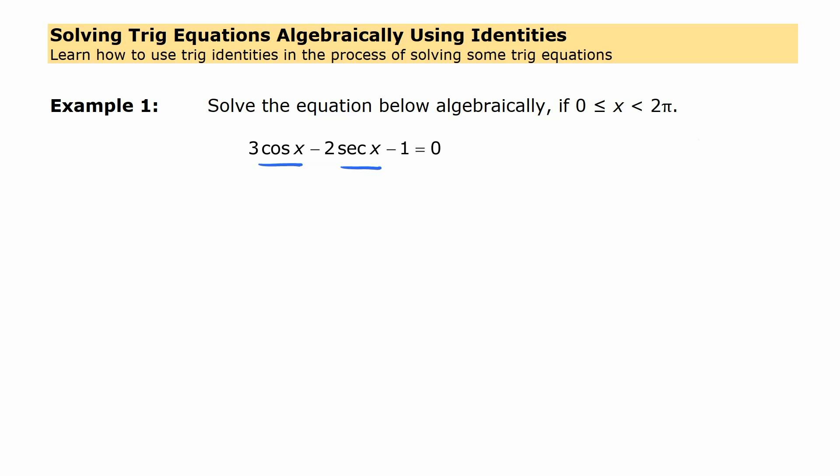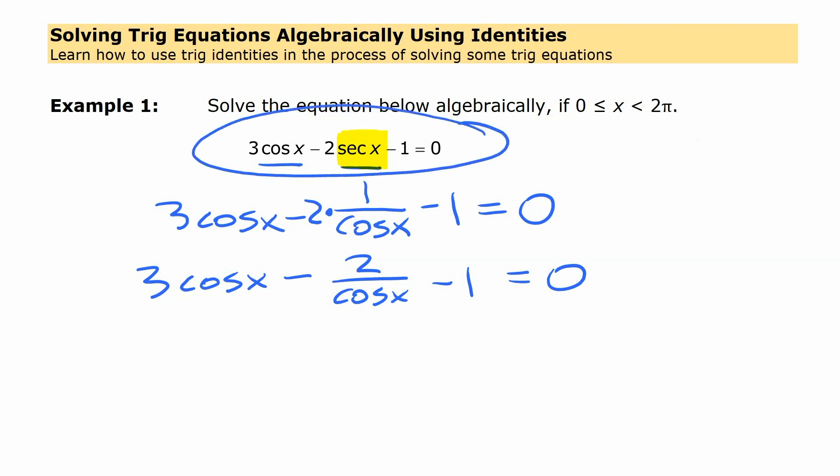The one that we're going to use is the one that relates cosine and secant. Specifically we're going to replace this secant here with what we know it's equivalent to, which is 1 over cosine of x. Everything else we're going to leave the same. So we're going to have 3cos x minus 2 times that minus 1 equals 0. Or maybe what would look a little simpler is 3cos x minus 2 over cos x minus 1 equals 0. And now we've achieved our first goal, which is taking something that involves two different trig functions and creating a new equation that has just a single trig function in it.